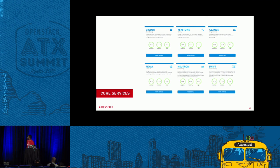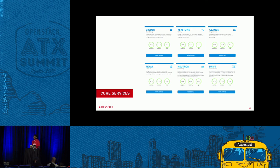Here are your core services. You've got Cinder, which provides your block storage. Keystone does your identity. Glance is your image service. Nova does compute. Neutron does networking. And Swift does object storage.